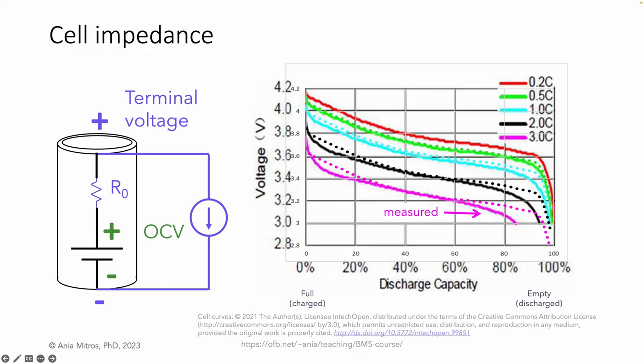Just to be clear: the solid lines are measured data, and the dotted lines are calculated starting with the red curve and applying a simple IR drop as in the schematic. The difference between the measured solid lines and the model dotted lines is our modeling error. All models have some error. If this residual error is too much for a given application, we need a more sophisticated model.